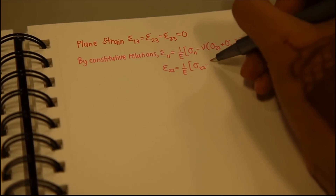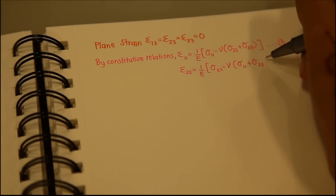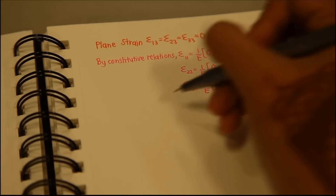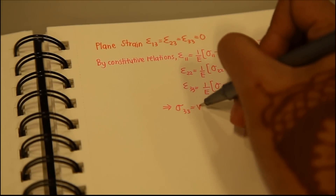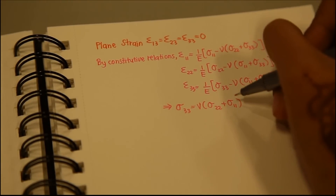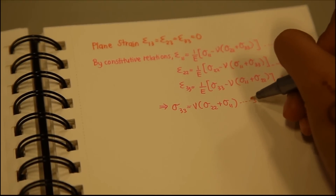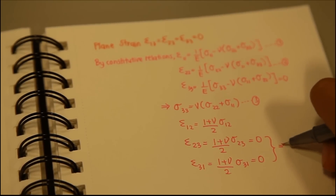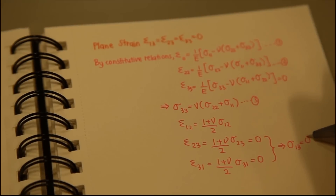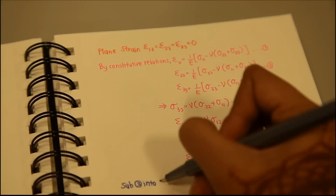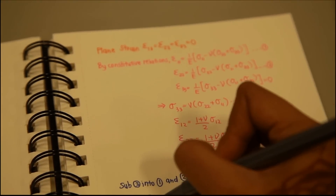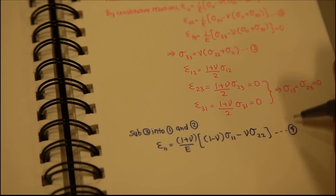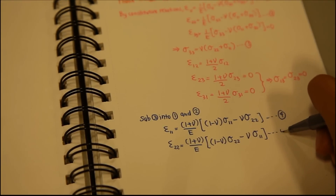Epsilon 3,3 equals zero, from which we obtain sigma 3,3 equals mu(sigma 2,2 plus sigma 1,1) — equation 3. We can also get the shear strain, and from this sigma 1,3 equals sigma 2,3 equals zero. Substituting equation 3 into equations 1 and 2, we get epsilon 1,1 (equation 4), epsilon 2,2 (equation 5), and epsilon 1,2 equals gamma 1,2 (equation 6).